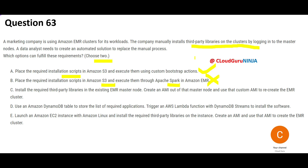Option C says you install third-party libraries on the master node, create an AMI out of the master node, and use that custom AMI to create the EMR cluster. At face value this option looks correct — we do something similar at least in terms of EC2.